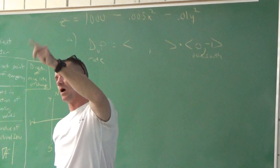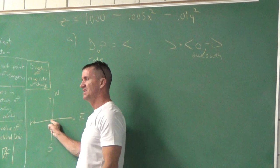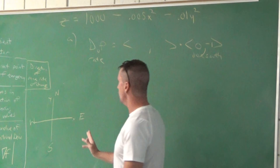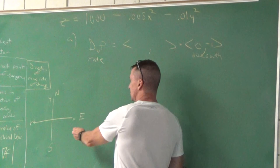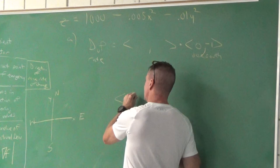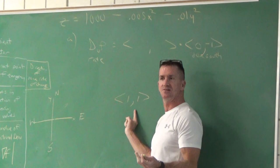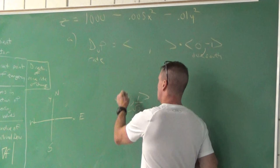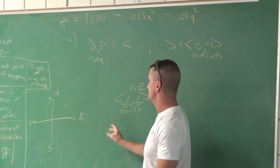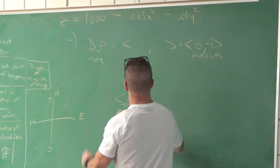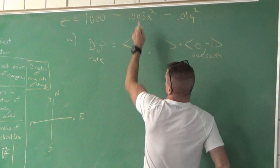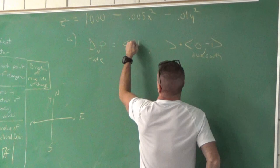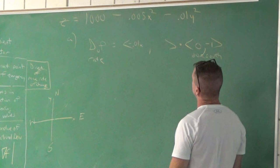Before we do part B, note that northeast would be a vector like (1,1), but you must make it a unit vector by dividing by √2, giving (1/√2, 1/√2). Northwest would be (−1, 1)/√2. For part B, we're going northwest, so the unit vector is (−1/√2, 1/√2). Dotting (−0.6, −0.8) with (−1/√2, 1/√2): 0.6/√2 − 0.8/√2 = −0.2/√2 — negative, so you're descending going northwest.